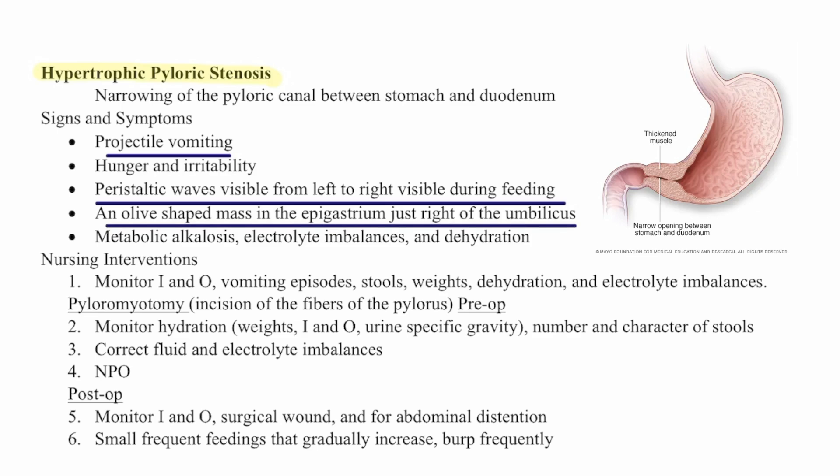Nursing interventions include monitoring I&Os, vomiting episodes, stools, weights, dehydration, and electrolyte imbalance. The patient may need a pyloromyotomy, which is an incision of the fibers of the pylorus. Pre-op, we monitor hydration, weights, I&O, urine specific gravity, number and characteristics of stool, correct fluid and electrolyte imbalance, and the patient may be NPO.